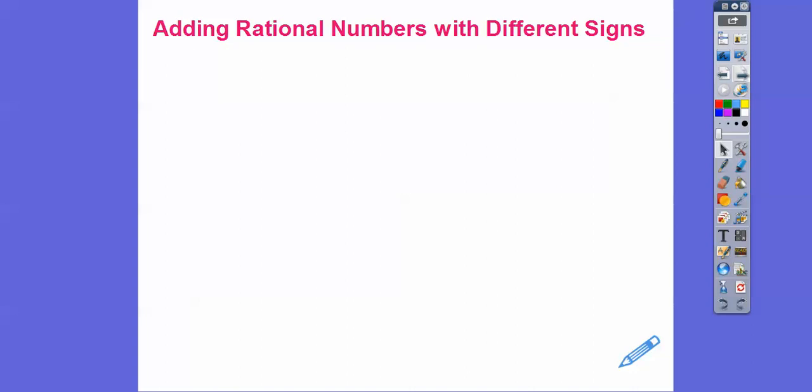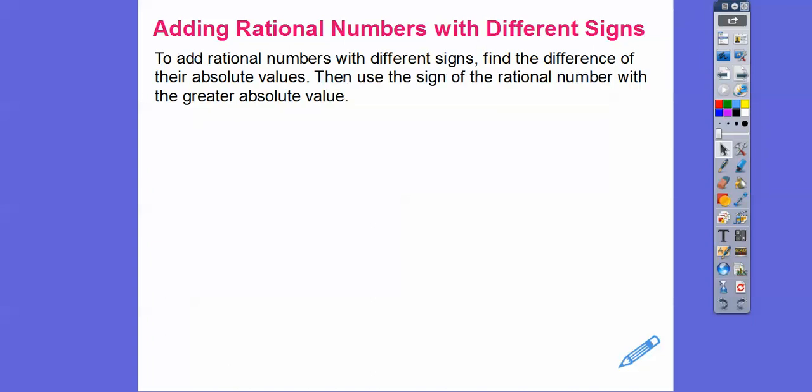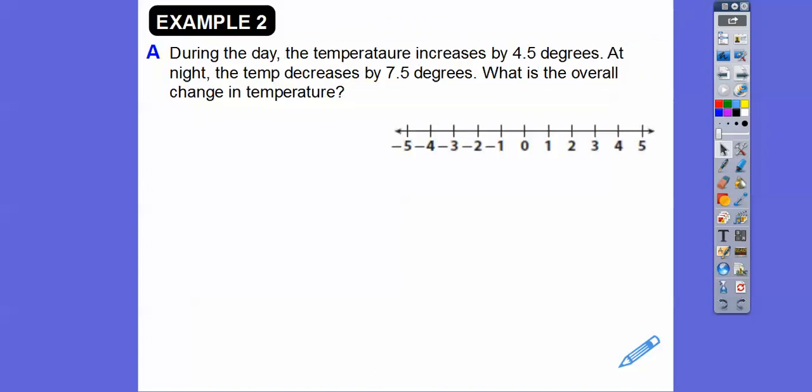Now, adding rational numbers that have different signs. To add rational numbers with different signs, we subtract them — we find the difference of their absolute values — and then use the sign of the rational number that has the greater absolute value. We're going to use number lines here still though.